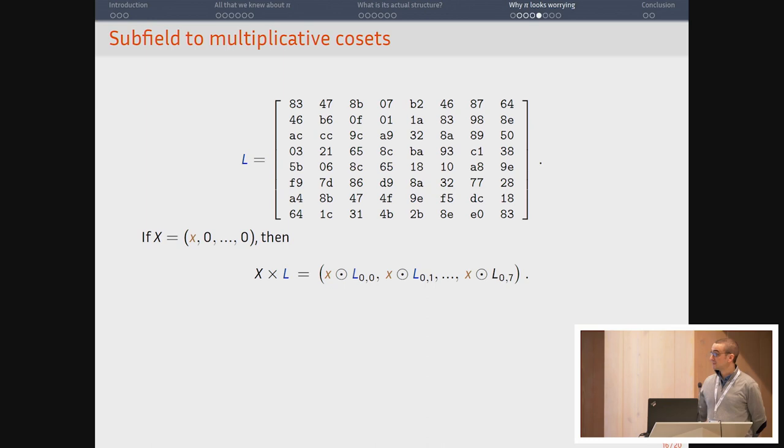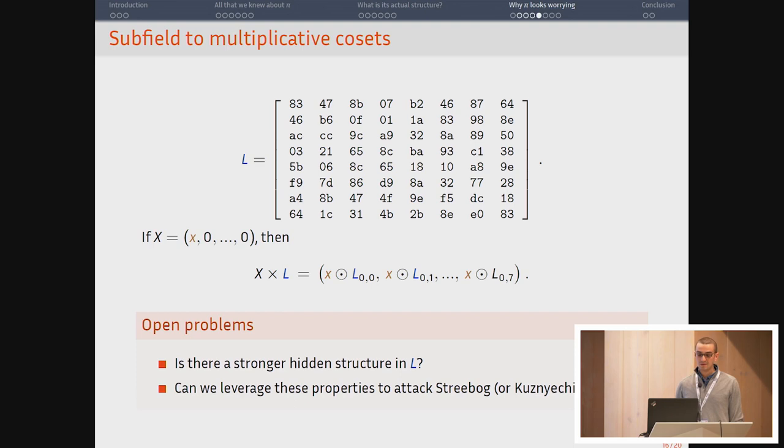So if you take a vector of this shape, you just have one element x which is in the subfield and everything else is equal to 0. When you apply this binary matrix to the vector, you get elements that are going to iterate through multiplicative cosets of the subfield. So if x is in the subfield and is looping over the subfield, each cell of the output vector after multiplication by this matrix are going to iterate over multiplicative cosets of the subfield.